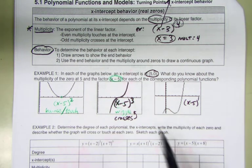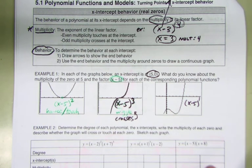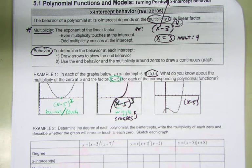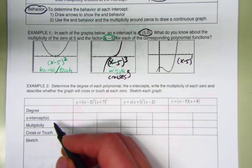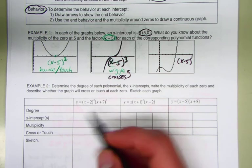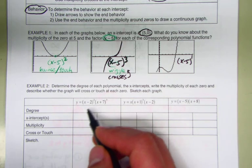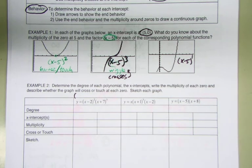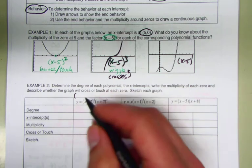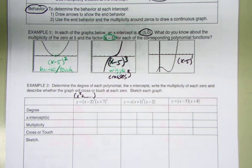With this background on multiplicity and the end behavior from yesterday, you should now be able to draw pictures for these examples. But you've got to find all the details out first. The degree comes from the highest exponent when everything is multiplied out. We don't have everything multiplied out here, but if you foil out (x minus 2) squared, the very first term is x squared.